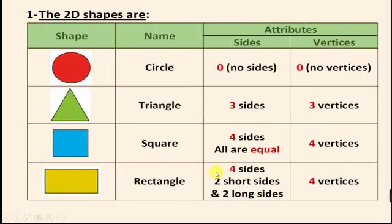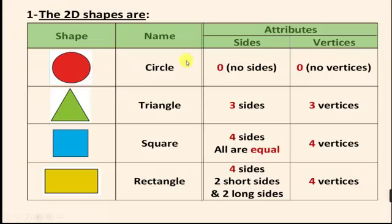Let's remember the 2D shapes we took in Primary 2 and see if they are polygons or not. The first shape is a circle. The circle has zero sides and zero vertices. Is it a polygon? No, it's not a polygon because it is curved and has no sides.